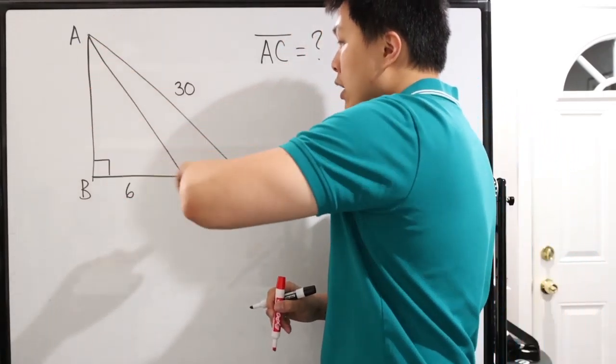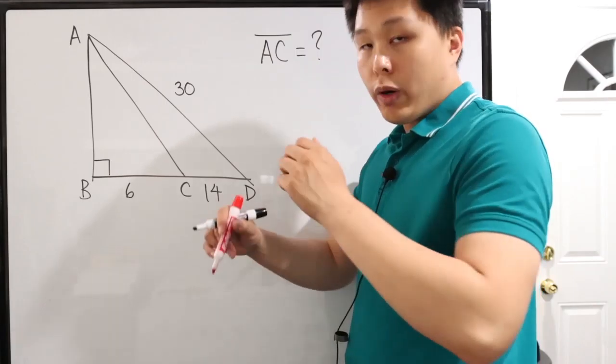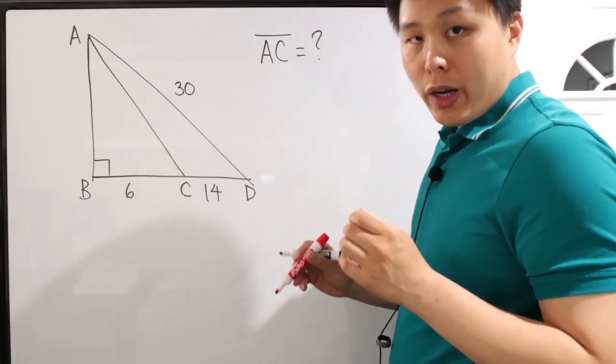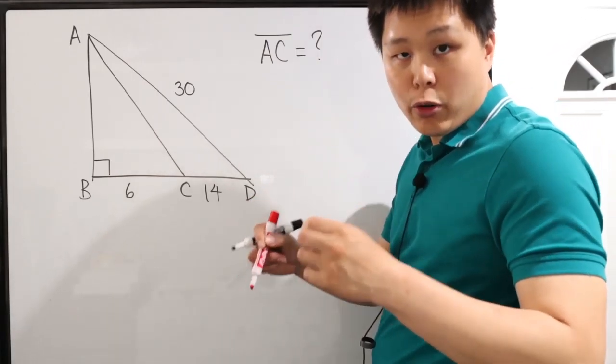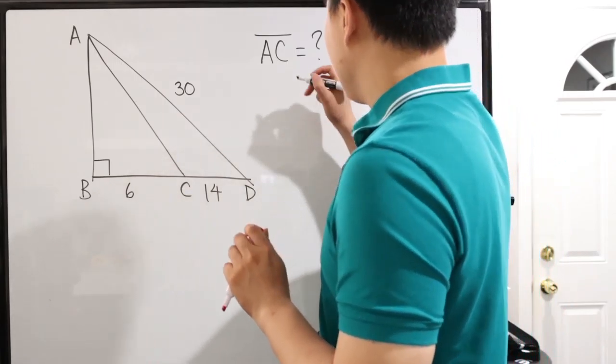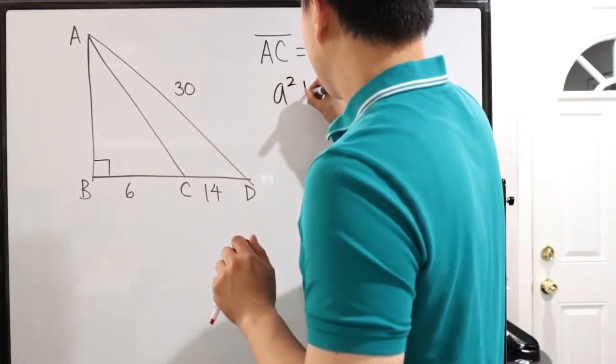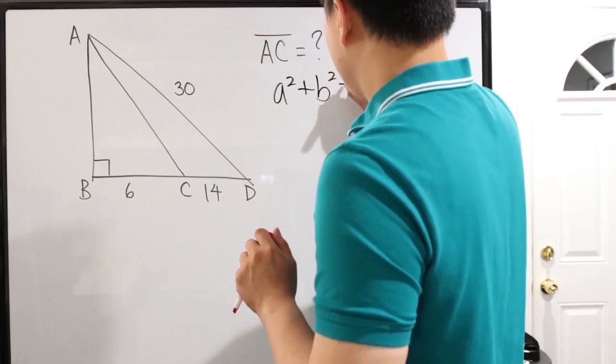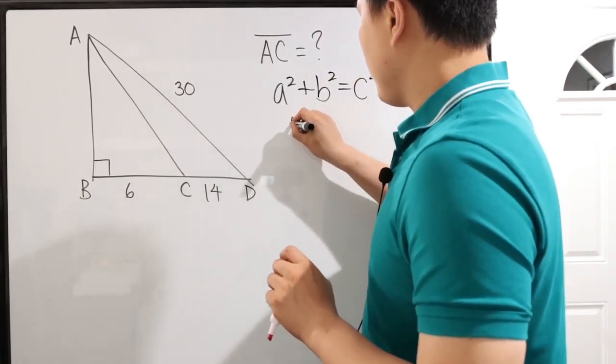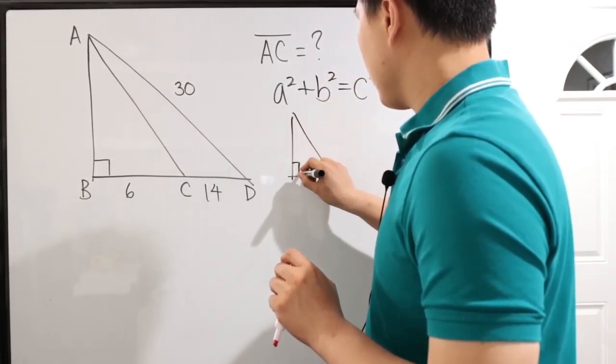This tells us this entire triangle is a right triangle. Now, with right triangle, we have something special. It's the Pythagorean theorem, right? That tells us that A squared plus B squared equals C squared, where remember that when we're talking about right triangle,